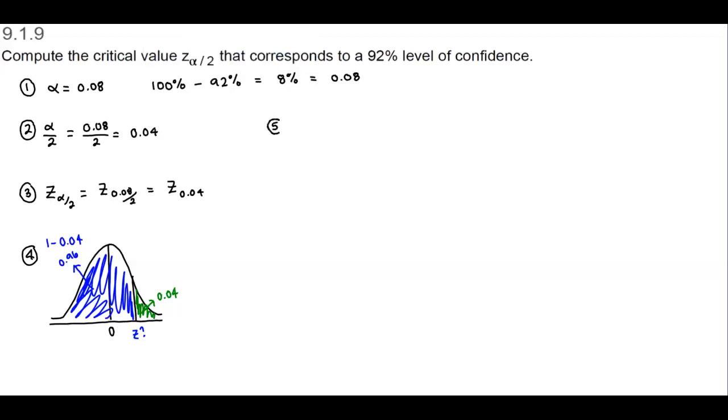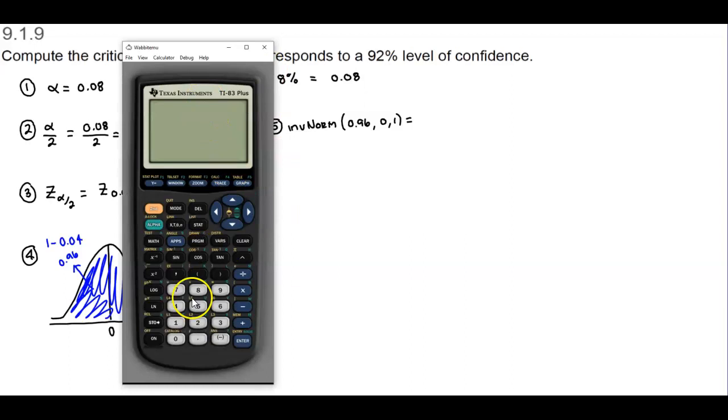Now we're going to use our calculator and StatCrunch to determine what is that critical value of Z. We're going to use INV norm, and we're going to use the area that's to the left of that Z score of 0.96. We know that our mean is 0 and our standard deviation is 1.